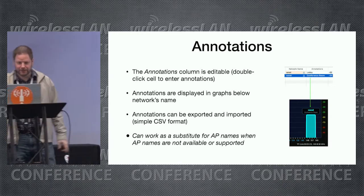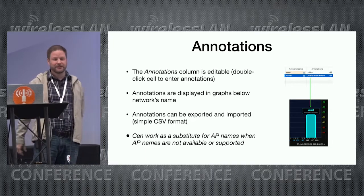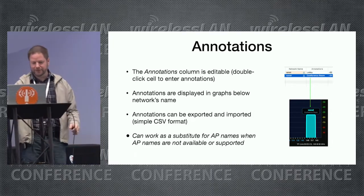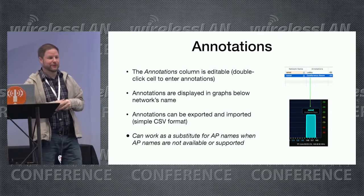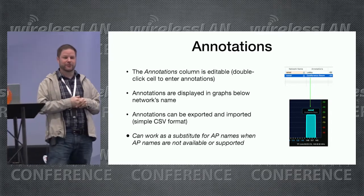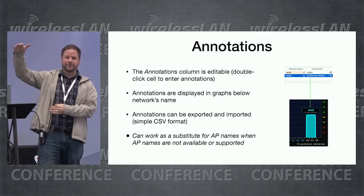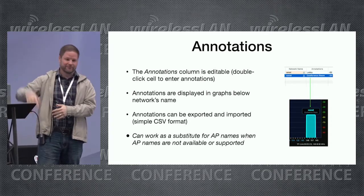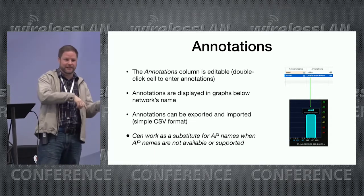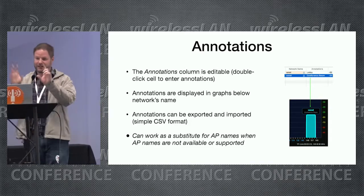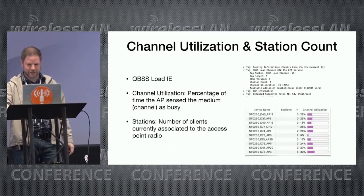Annotations can be used to add labels to networks, and can serve as a substitute if your infrastructure doesn't support AP name discovery. You can get a list of AP names generated from somewhere along with a list of BSSIDs, import that as annotations, and get AP names for the different networks.